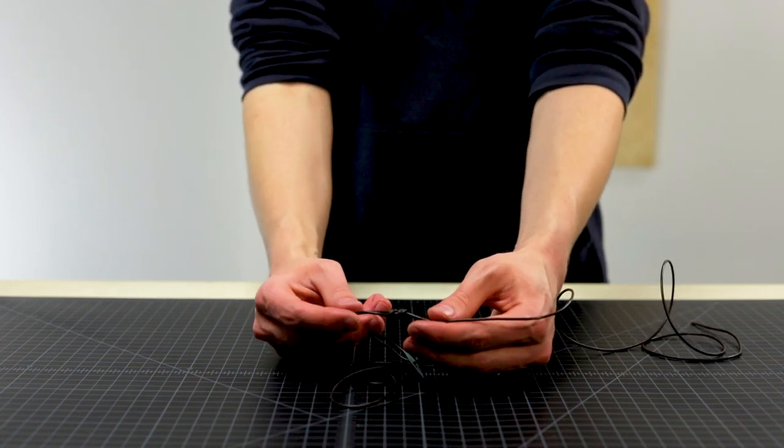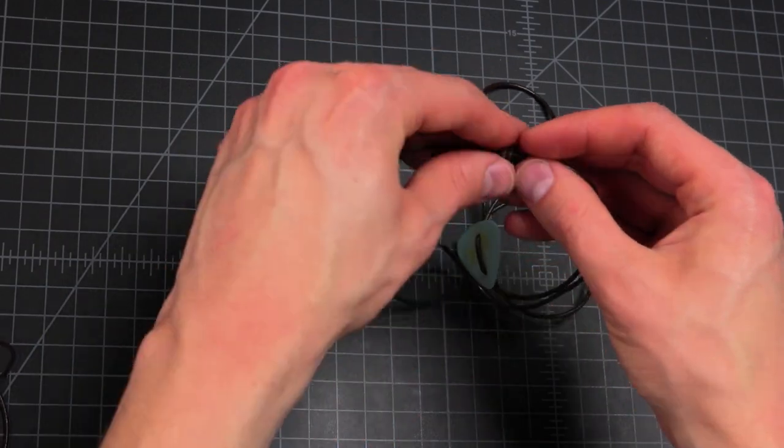Now with those knots together, that's the widest your bracelet goes. So cinch it tighter once it's on your wrist. Just pull those two knots apart.